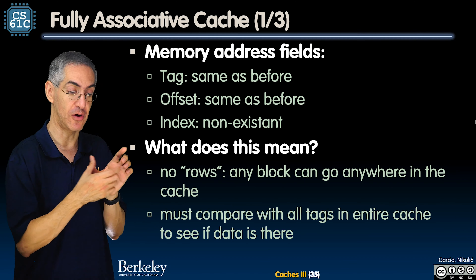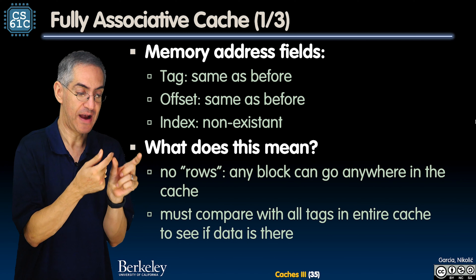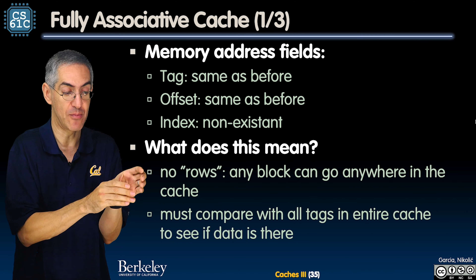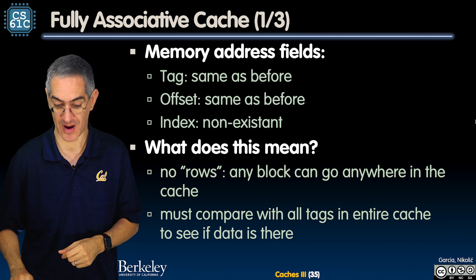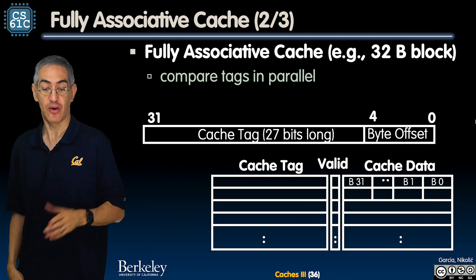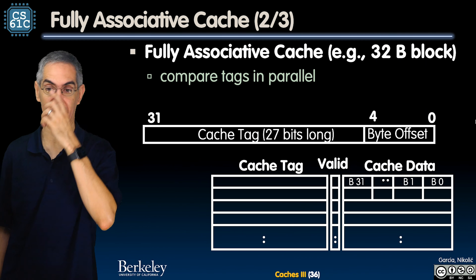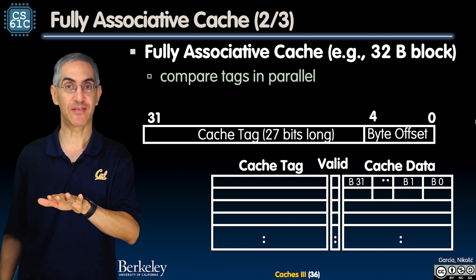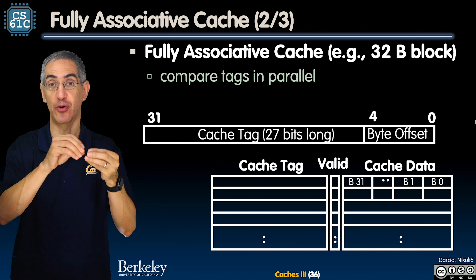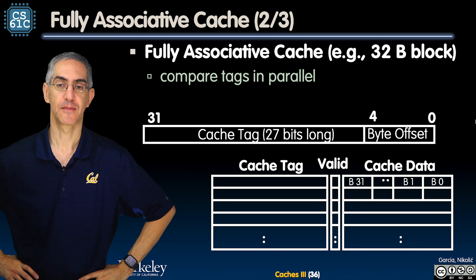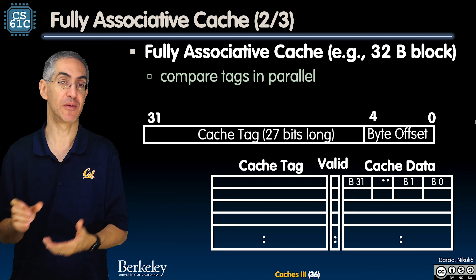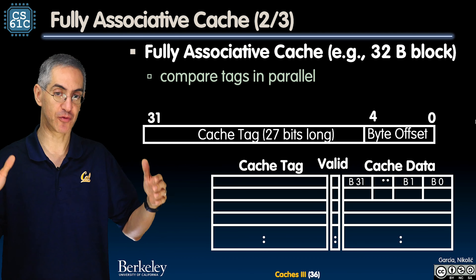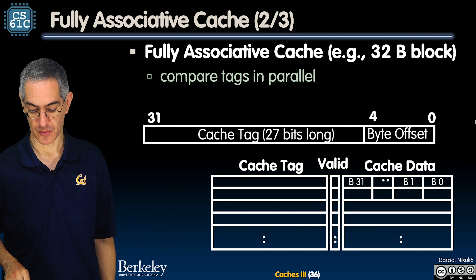You have to compare all the tags in the entire cache to see if the data is there. Because there's no index anymore, the tag width — which is a function of I and O — now has no I. So now there's only an O, which means the tag got bigger. For example, a 32-byte block uses five bits for the offset. With a 32-bit address, that means 27 bits go to the tag.